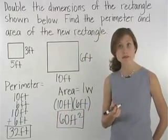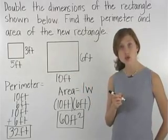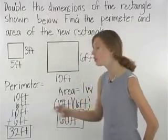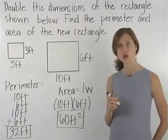So if we double the dimensions of our original rectangle, then the new rectangle has a perimeter of 32 feet and an area of 60 feet squared.